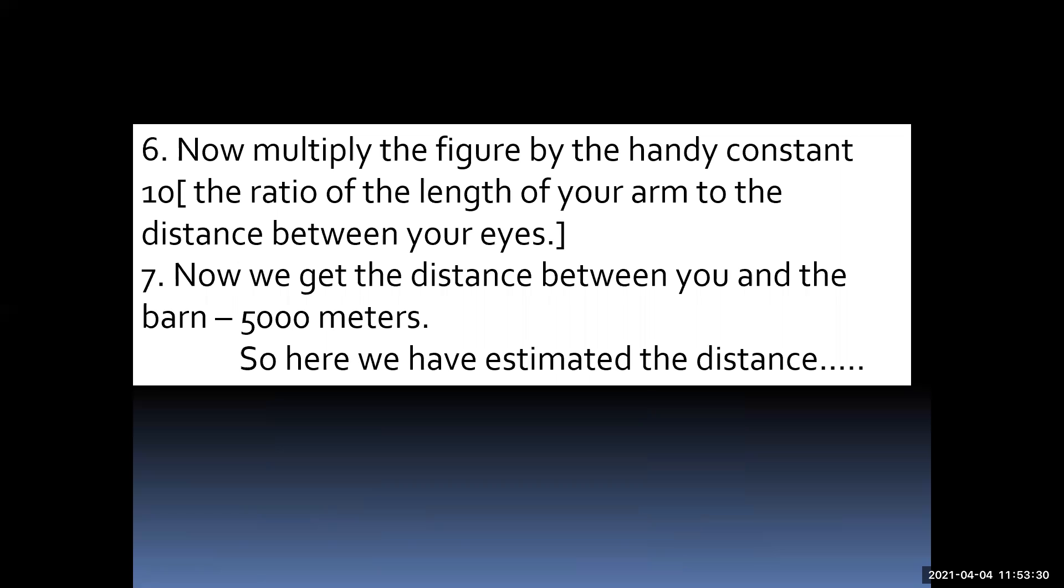Step six: Now multiply the figure by the handy constant of 10, which is the ratio of the length of your arm to the distance between your eyes. This could vary—it might be 10, 11, or 12. Step seven: Now we get the distance between you and the barn, which is 5000 meters. So here we have estimated the distance.